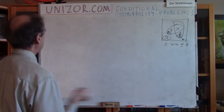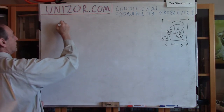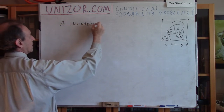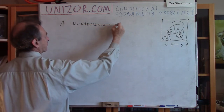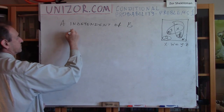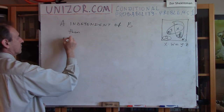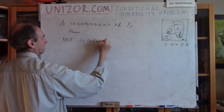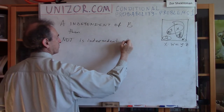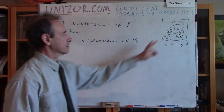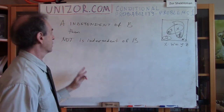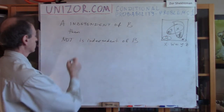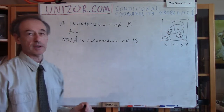Problem number two: we have to prove that if A is independent of B, then not-A is also independent of B. The condition is exactly the same as before — I just have to prove that if A is independent of B, then not-A is independent as well.